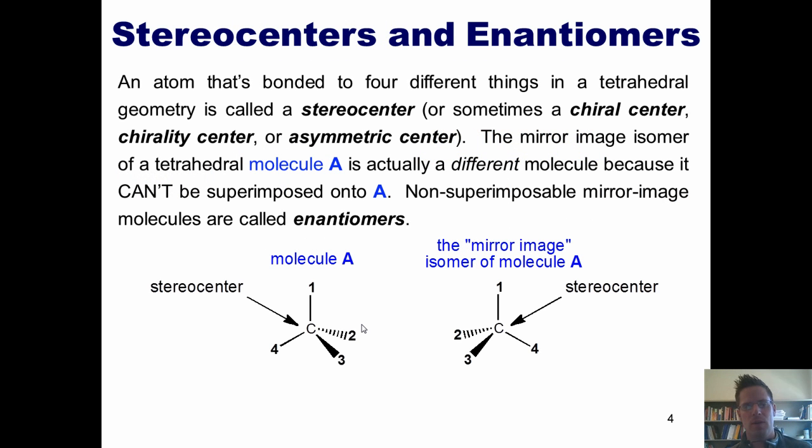One thing I want you to know is that an atom, such as these carbon atoms shown in these two molecules, that's bonded to four different things in a tetrahedral geometry, is called a stereocenter. And sometimes also called a chiral center, a chirality center, or an asymmetric center.